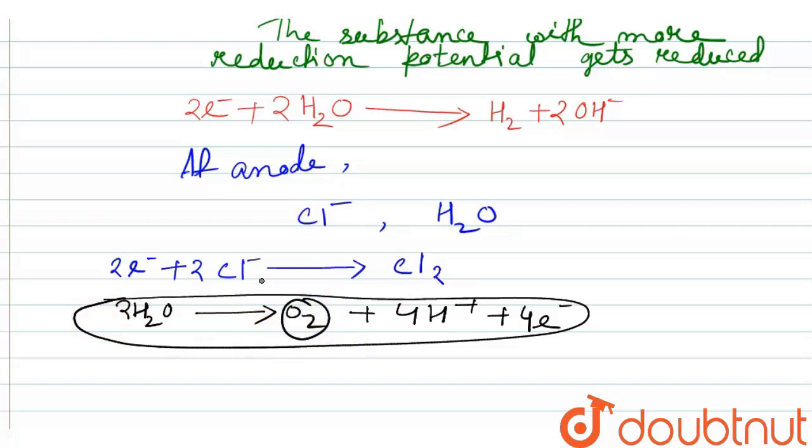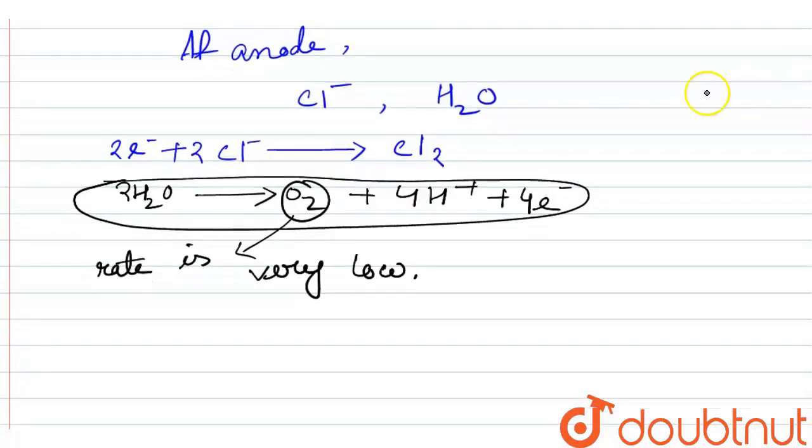But what happens after formation of oxygen? The rate of formation of oxygen is very low. So to fasten the reaction, we have to add some overpotential. When we add overpotential to it, the reaction forms Cl2 because this is kinetically favored. This reaction is fast.